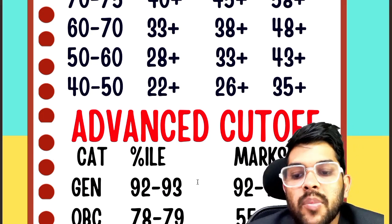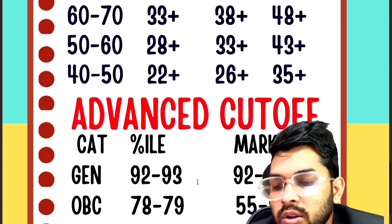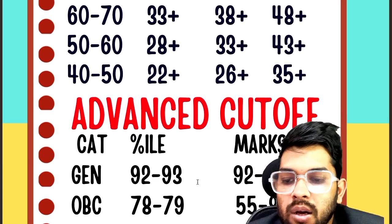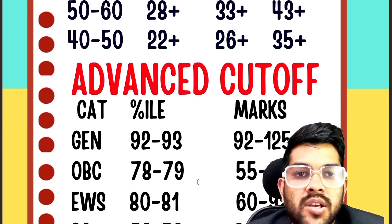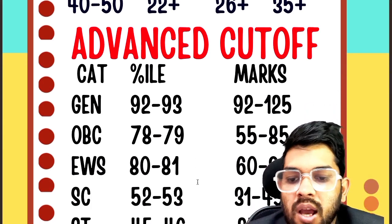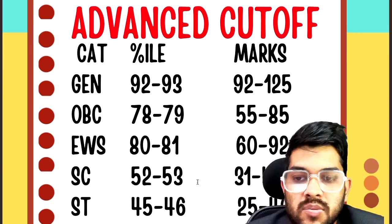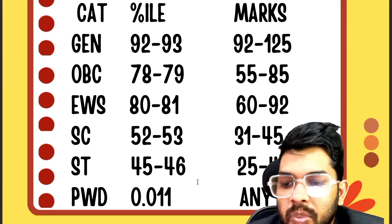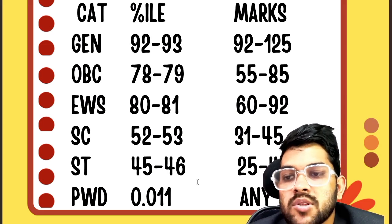For OBC category, 78 to 79 percentile will be the cutoff, requiring 55 to 85 marks. For EWS, 80 to 81 percentile and 62 to 92 marks. For SC, 52 to 53 percentile with 31 to 45 marks required. For ST, 45 to 46 percentile with 25 to 40 marks. For PwD, you simply need to reach the exam center — you are qualified for the advanced examination.